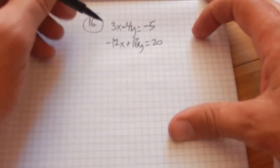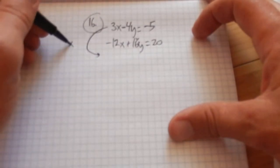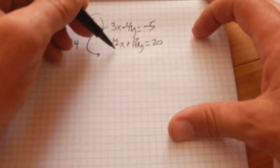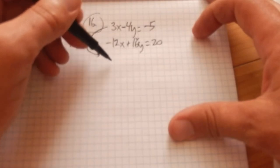So this is already a negative 12x. If I were to multiply this top equation by 4, that would make this a positive 12x. And then when I add them together, my x's will cancel.